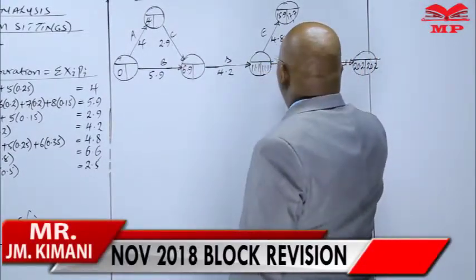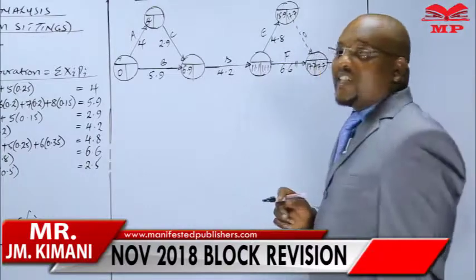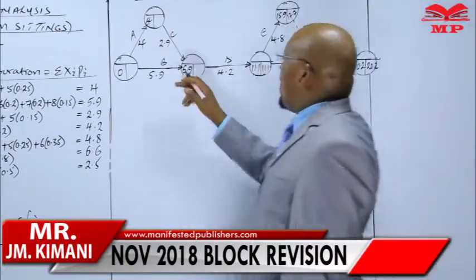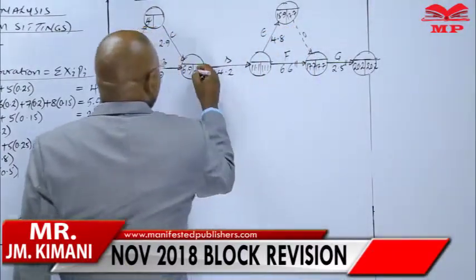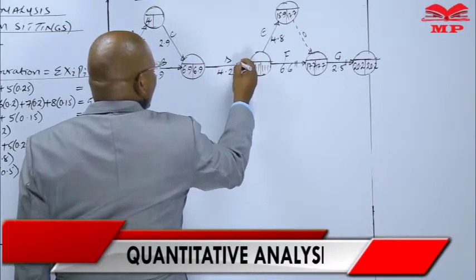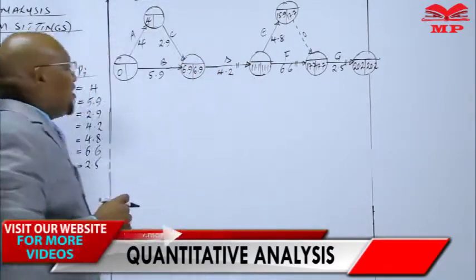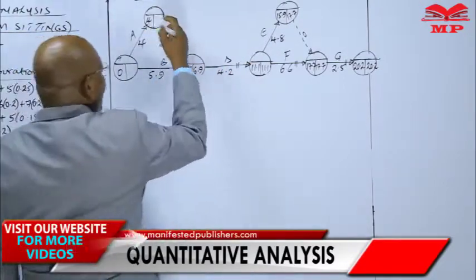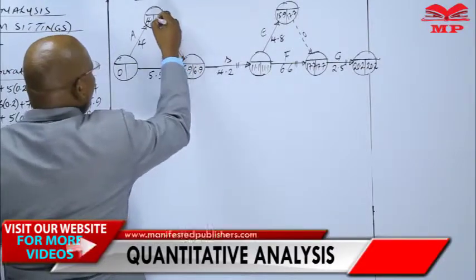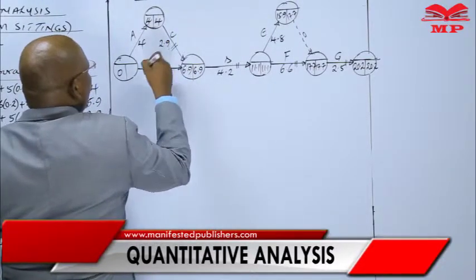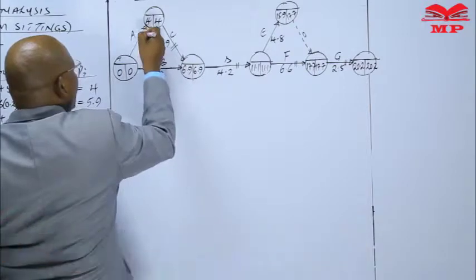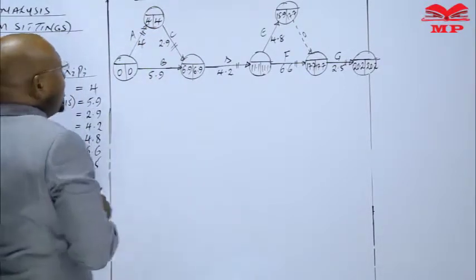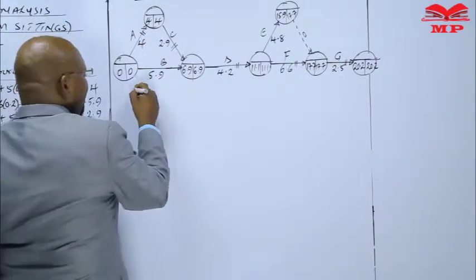Then going down or either this way, you have 11.1. Activity F is the one which is critical. Then going backward, this will give us 6.9, meaning activity D is critical. Then finally, going up here, this will give us 4, which is critical. Then down, this is 0. Activity A is the one critical but not activity B.